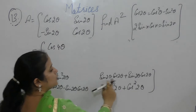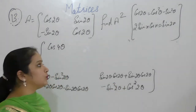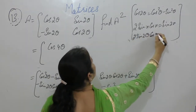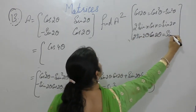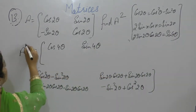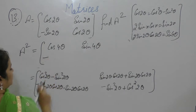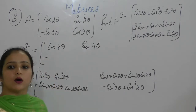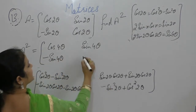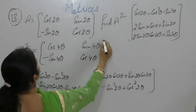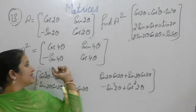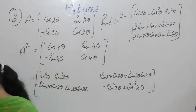So we will get cos of 4 theta. It becomes 2 sin 2 theta cos 2 theta. The angle becomes double, so here also the angle becomes double: sin 4 theta. Minus common: 2 sin 2 theta cos 2 theta equals sin 4 theta. Cos squared minus sin squared gives cos 4 theta. So the result is cos 4 theta, sin 4 theta minus sin 4 theta cos 4 theta.